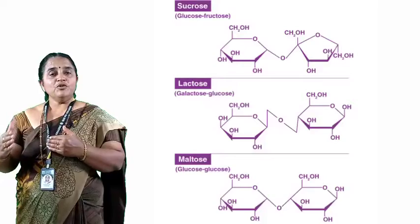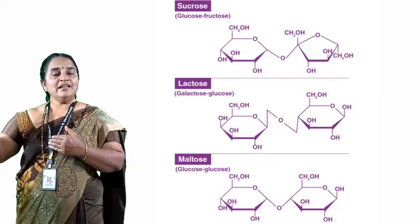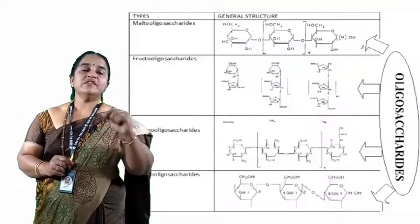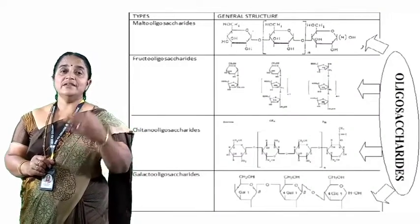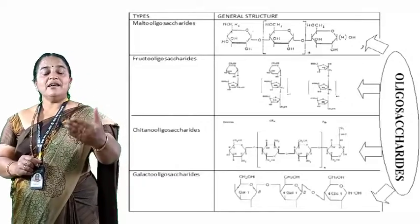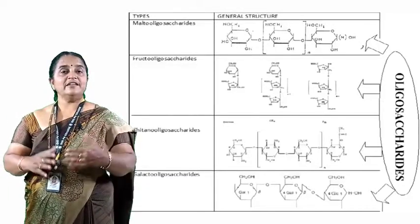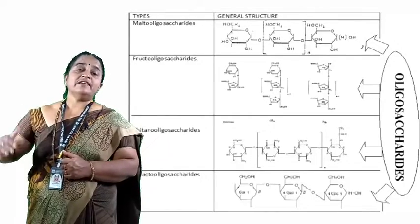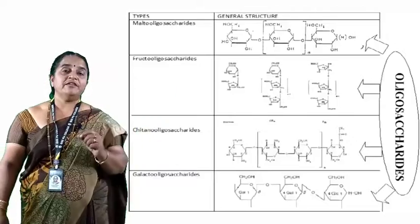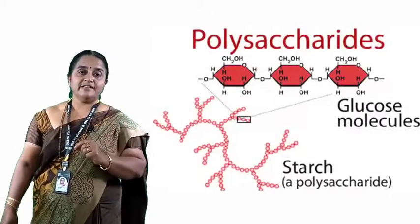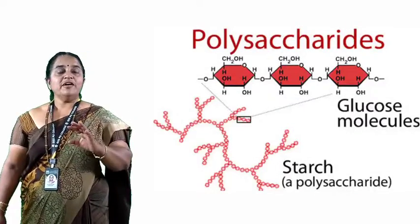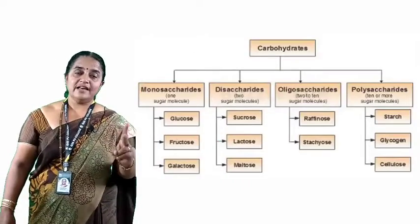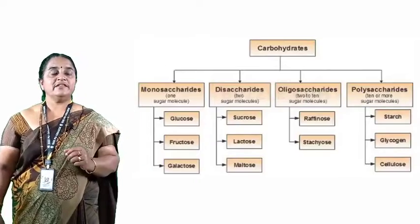When more than two monosaccharides but fewer than ten are linked in a chain, we call them oligosaccharides. They may be trisaccharides, tetrasaccharides, pentasaccharides, hexasaccharides, and so on. When the number of monosaccharides exceeds ten up to infinite, we call it polysaccharides. So carbohydrates are available in four forms: monosaccharides, disaccharides, oligosaccharides, and polysaccharides.